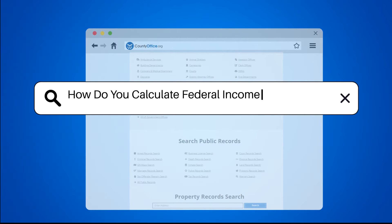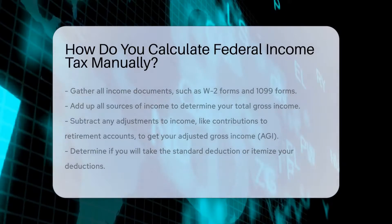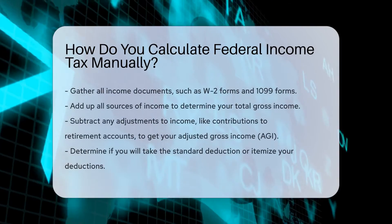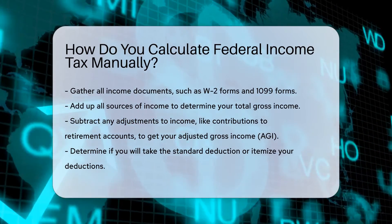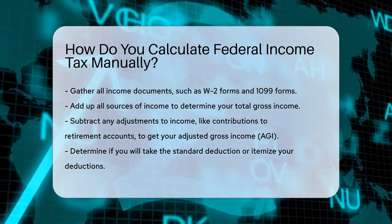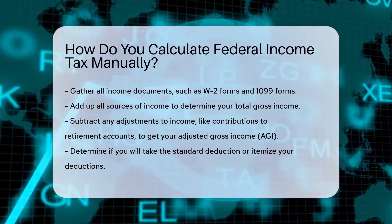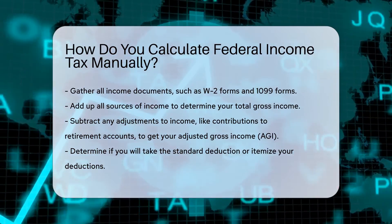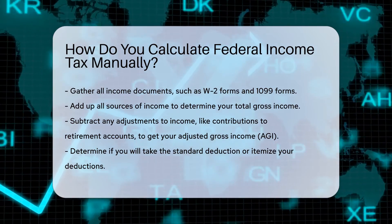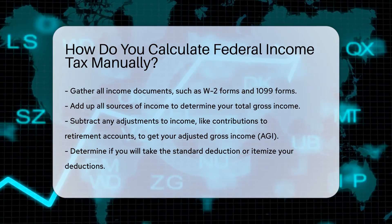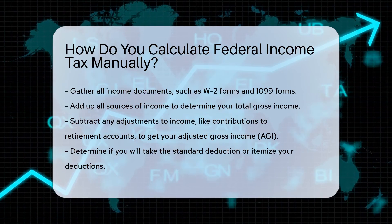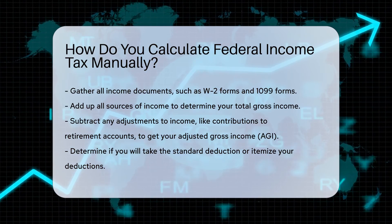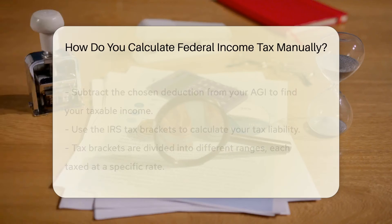How do you calculate federal income tax manually? First, gather all your income documents, such as W-2 forms and 1099 forms. Add up all sources of income to determine your total gross income. Subtract any adjustments to income, like contributions to retirement accounts, to get your adjusted gross income, AGI.